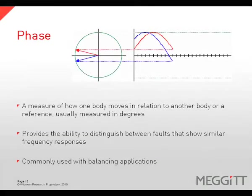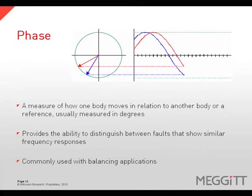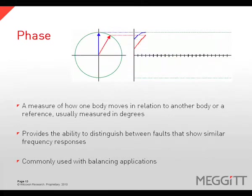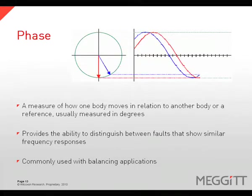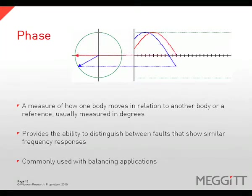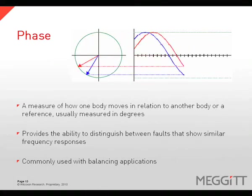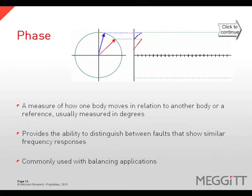Phase is a measure of how one body moves in relation to another body or to a reference, and is usually measured in degrees. Phase provides the ability to distinguish between faults that show a similar frequency response, and is commonly used with balancing applications.